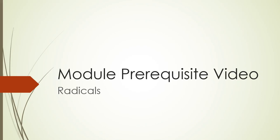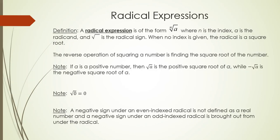Hello, this is a video about simplifying radicals. First we need to understand what a radical expression is. It is read as the nth root of a, wherein that little number outside what we call the radical sign is the index. The quantity under the radical is called the radicand, and that sign is called a radical sign.